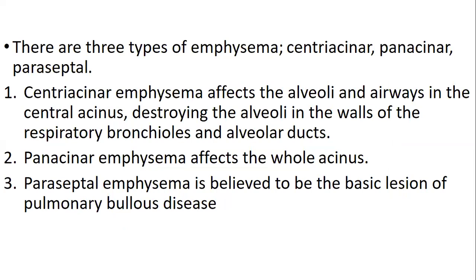Breathing out in particular is dependent on recoiling, and at this point the recoiling property is lost. There are three types of emphysema: centriacinar emphysema, panacinar emphysema, and paraseptal emphysema. In centriacinar emphysema, it affects the alveoli and airways in the central acinus, destroying the alveoli in the walls of the respiratory bronchioles and the alveolar ducts. Panacinar emphysema affects the whole acinus, while paraseptal emphysema is believed to be the basic region of pulmonary disease.